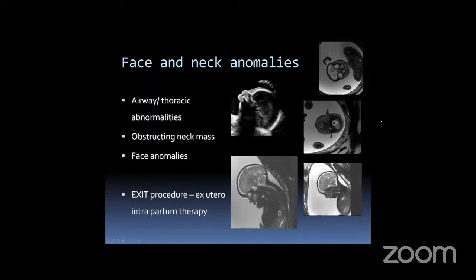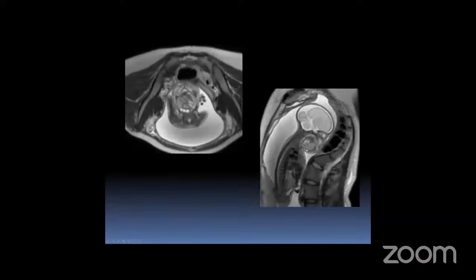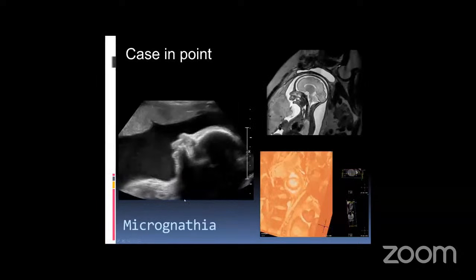A patient with polyhydramnios had fullness in the inferior neck and anterior neck area, difficult to define on ultrasound. On MRI we easily saw a large mass in the floor of the mouth obstructing swallowing and the airway and esophagus — that is why this baby was not swallowing. This was a teratoma in the floor of the mouth. Another case had severe micrognathia with polyhydramnios — the utility of MRI was in finding retrognathia with a posteriorly displaced tongue obstructing the oral and nasal pharynx. This allowed us to warn the pediatric surgeons that a tracheostomy would be needed.